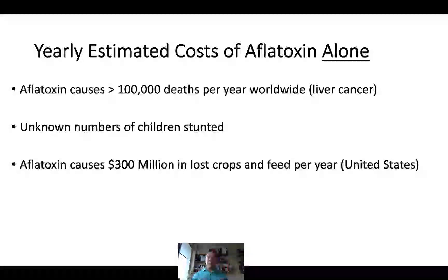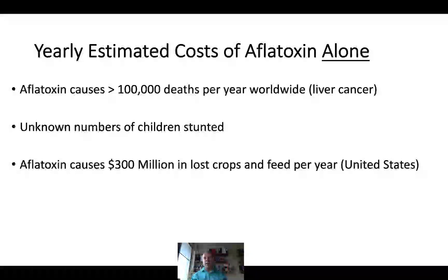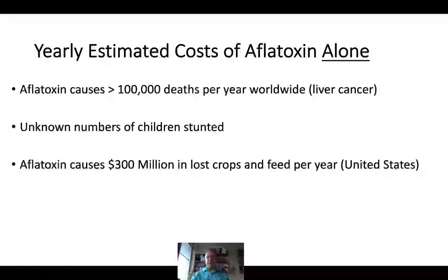In terms of estimated costs, aflatoxin alone appears to be the cause of over 100,000 deaths per year. The primary issue is liver cancer, one of the chronic long-term effects of aflatoxin consumption over time. There's also a stunting effect in children across populations that are typically consuming this. And certainly there is a loss of crops—when aflatoxin is identified above a certain level in the US, those crops cannot be used for food, and above that level they can't be used for animal feed either. That's where that $300 million figure comes from—and this is just one single mycotoxin out of the many we deal with on a regular basis.